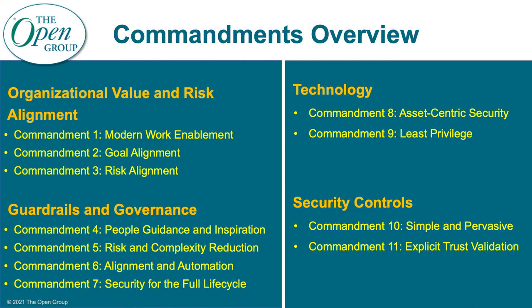Commandment 10 is about simple and pervasive security controls. The key is that security controls should be really hidden — they should just be part of the background, part of the fabric. People don't think about them; they don't have any more friction than necessary. For example, when a developer creates an environment in Azure or AWS, the security should just be built in. They shouldn't have to worry about it or think about it. So when security controls are built, you want them to be as simple and as invisible as possible, and just pervasive — that's just the way things work. This is the background, not the main characters.